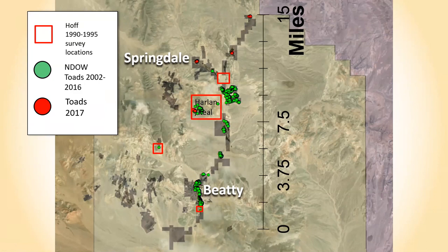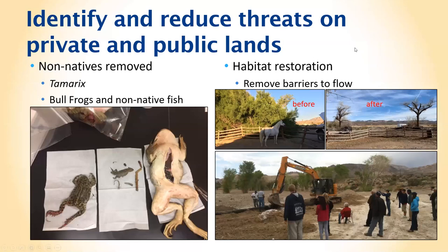The range is likely now 15 to 20 miles. Working with private landowners also allows beneficial habitat work. Bullfrogs got into Nevada in the late 1800s from the southeastern United States — a 73-millimeter adult toad and even a lizard were found in a bullfrog's stomach. Ponded habitat and dams benefit bullfrogs, so working with landowners to remove artificial berms and get rid of ponds helps lower the bullfrog population.